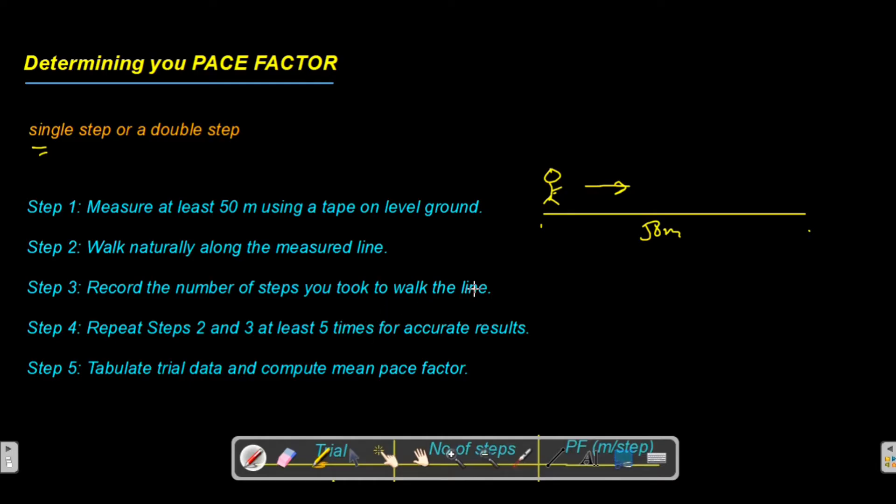Repeat steps two and three, walking along this line for at least five times so you have five trials for more accurate results. When you calculate your mean pace factor, tabulate your trial data then compute the mean pace factor. It's as simple as walking and recording the number of steps you took.